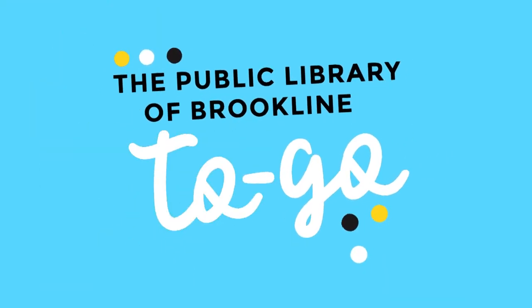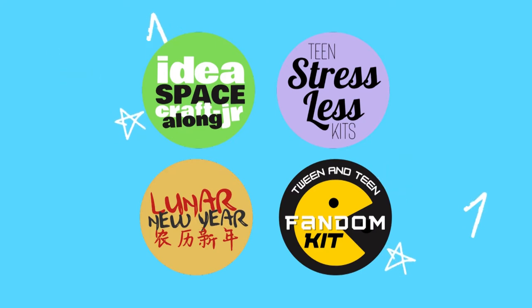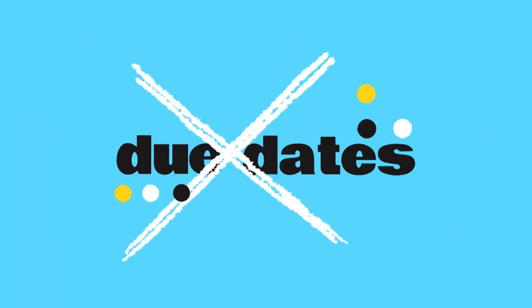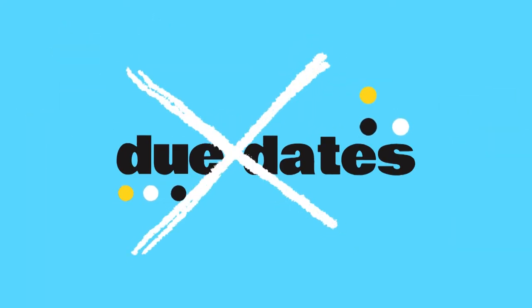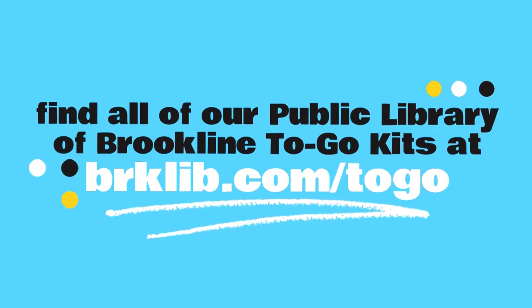Is this your first Public Library of Brookline to-go program? Here's how it works. Each month the library is offering new take-home program kits, complete with everything you need to follow along with video or written instructions created by one of your local librarians. The best part? Absolutely no due dates. You can keep everything included in your kit. Visit brklib.com/togo for a full list of our current kit offerings. Then come by any Brookline Library location the second Monday of every month to pick up your kit while supplies last.